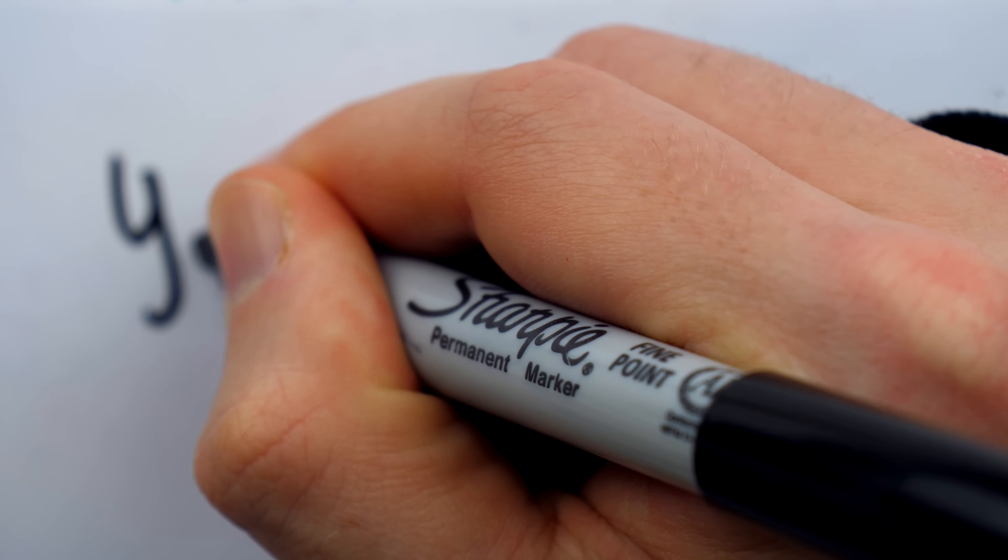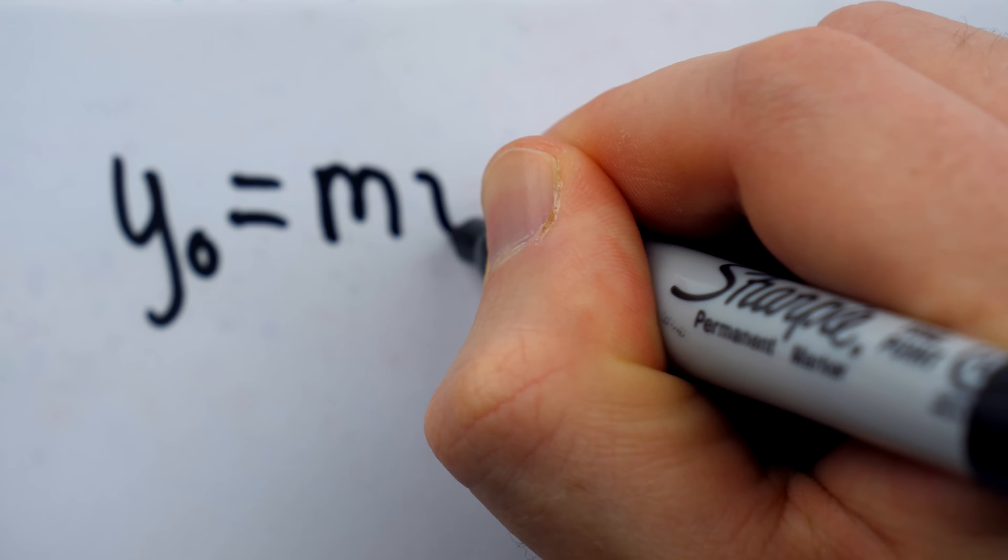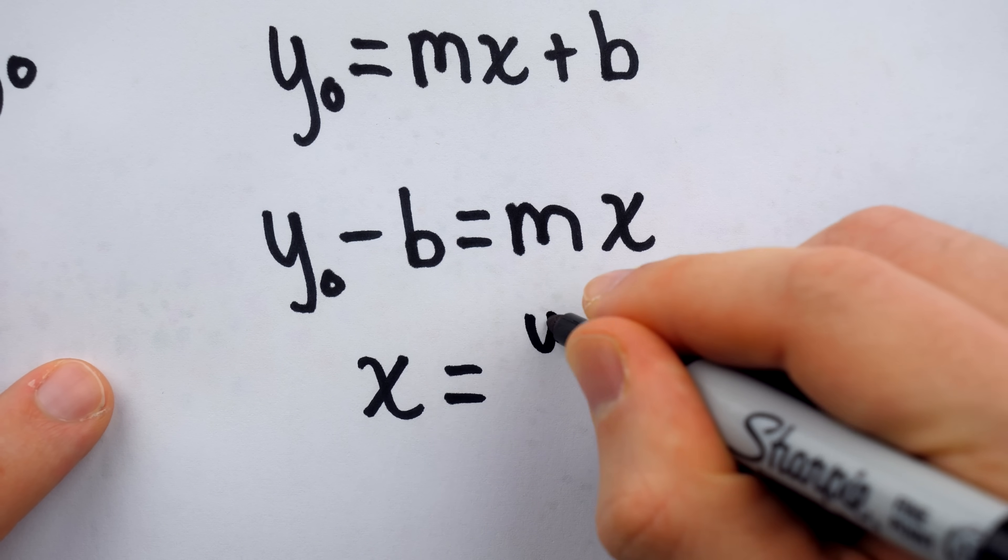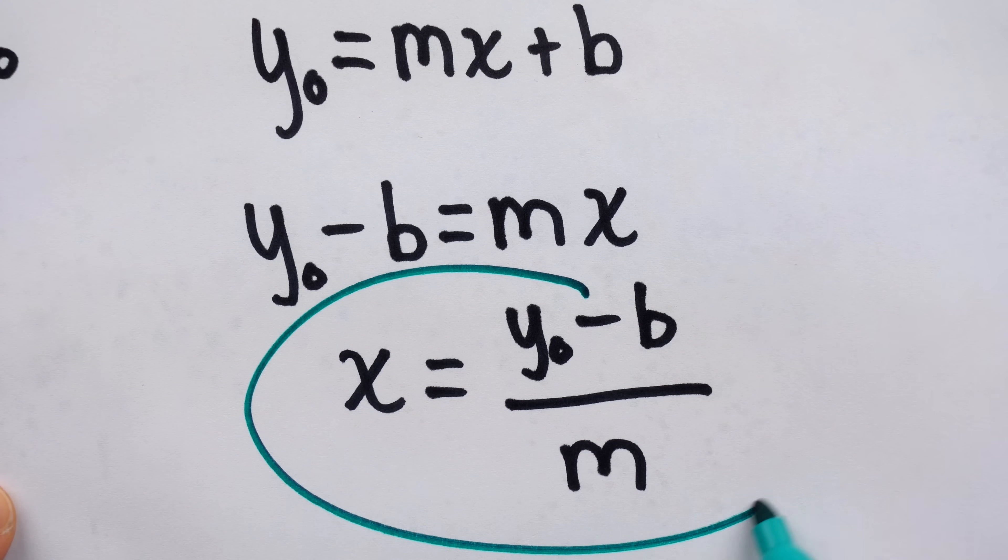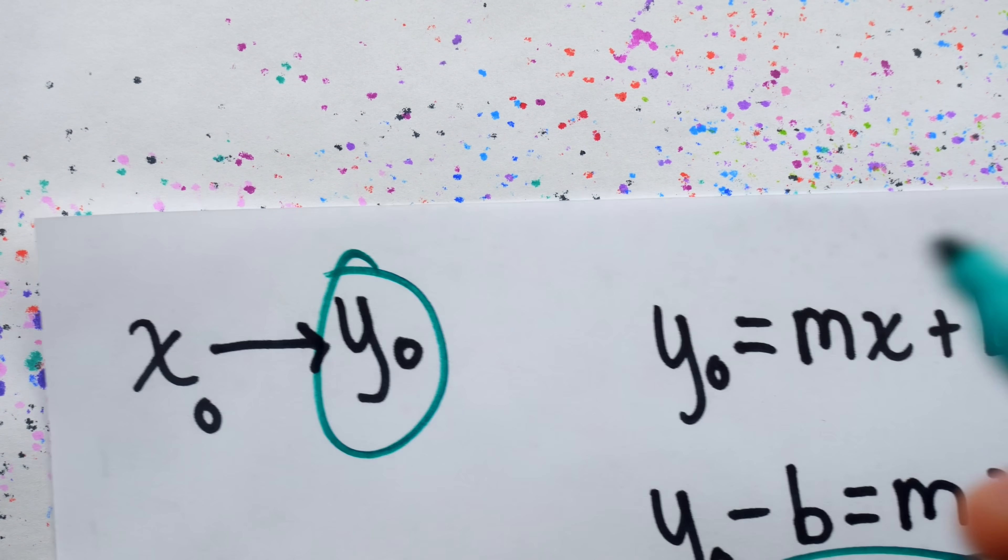And the answer is yes. You'd say just take the equation of our line and replace y with that given y value y naught, then subtract b from both sides, then divide everything by m and swap sides just for kicks. You then claim that this x value is the one that will produce the desired y value, y naught.